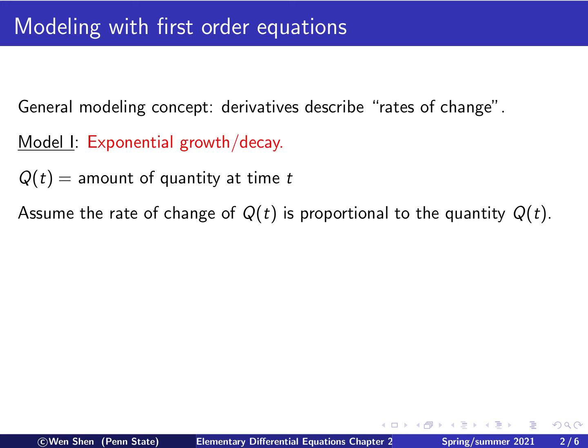And here is the model that describes the exponential growth or decay. So okay, so let's say Q is the quantity of unknown that we are studying. And it's a function of t. t is time. Assuming now that the rate of change of this Q(t) is proportional to the quantity Q(t).